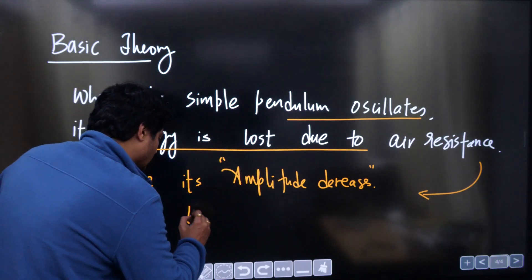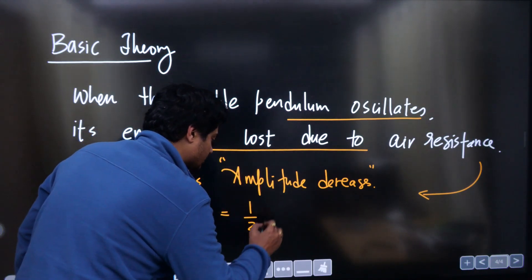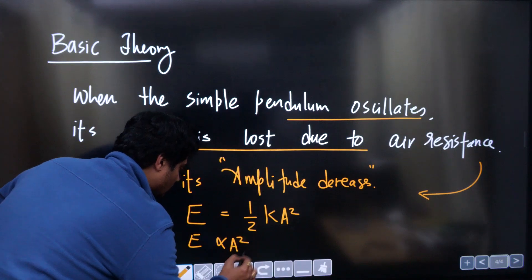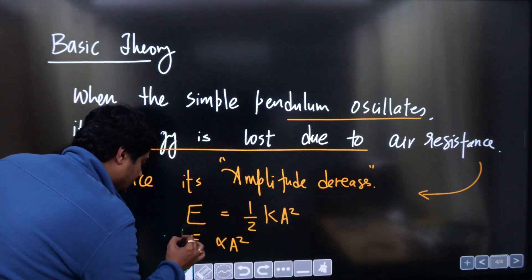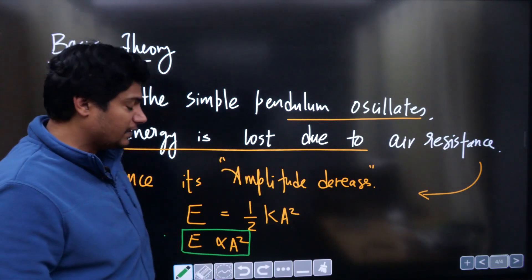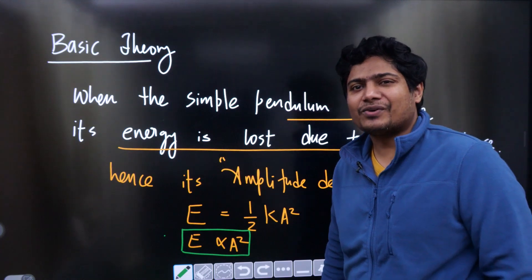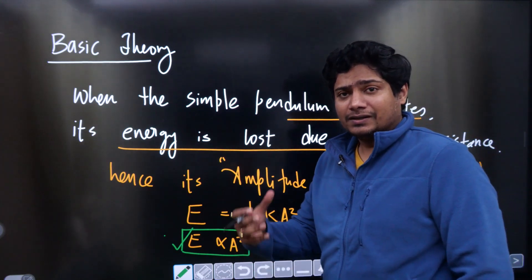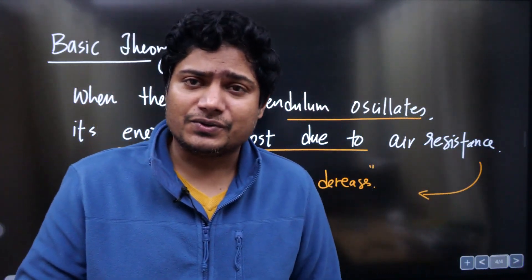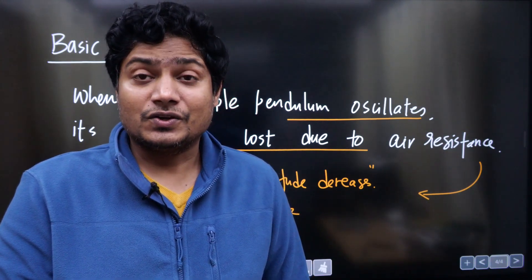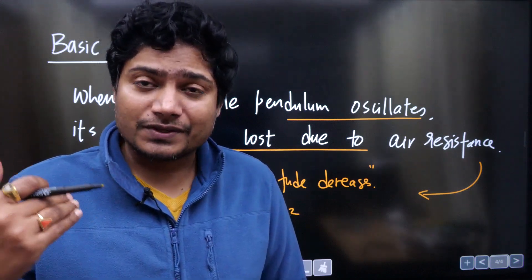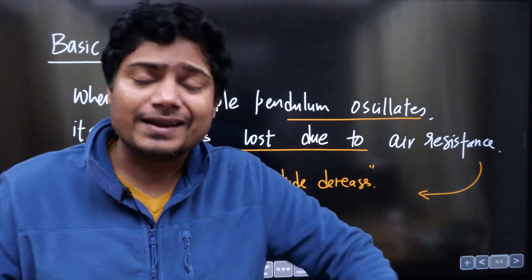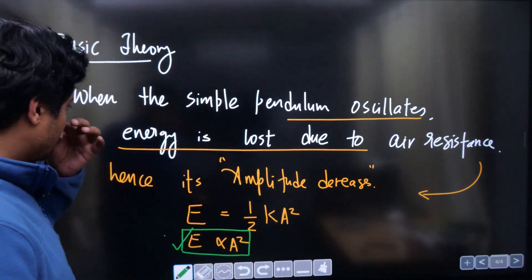As you already know, the total energy of SHM or oscillation is proportional to A squared. So E is proportional to A². That is why we are making the graph of A² versus time — indirectly, we are making the graph of energy versus time. The square of amplitude is basically the total energy of SHM. So from this experiment, you are finding how the energy of SHM decreases due to air resistance.